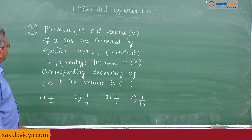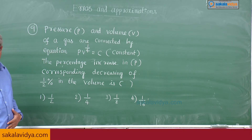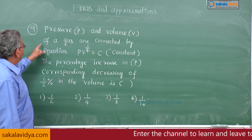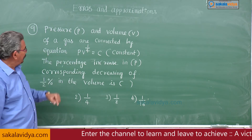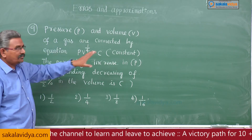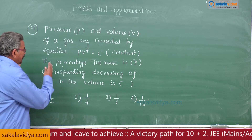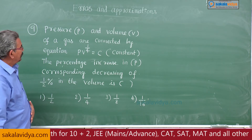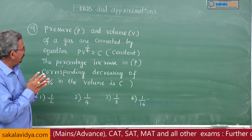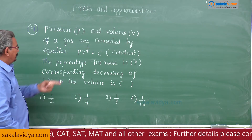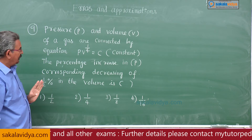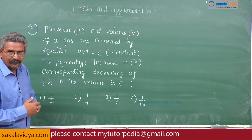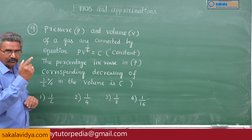Ninth problem. This problem is related to pressure and volume. The pressure p and volume v of a gas are connected by the relation p times v to the power of 1 by 4 equals constant c. The percentage increase in p corresponding to a diminution or decrease of half percent in volume means delta v by v into 100 equals minus half percent.